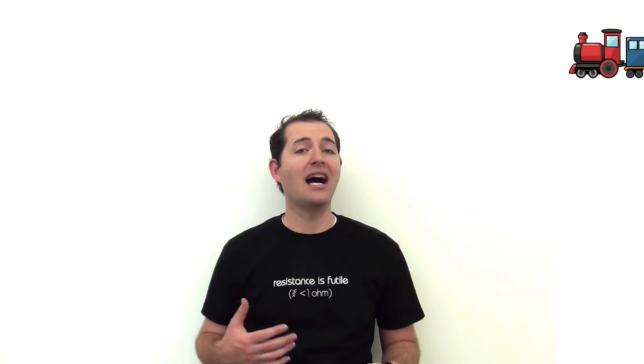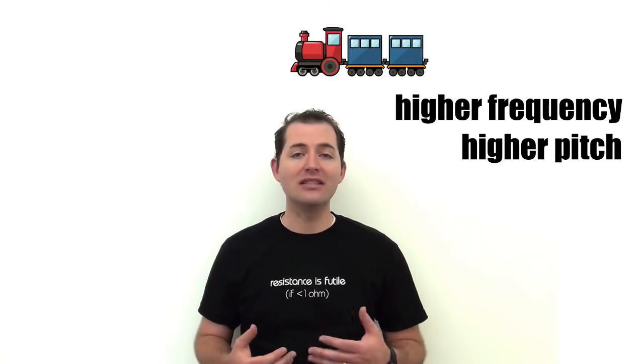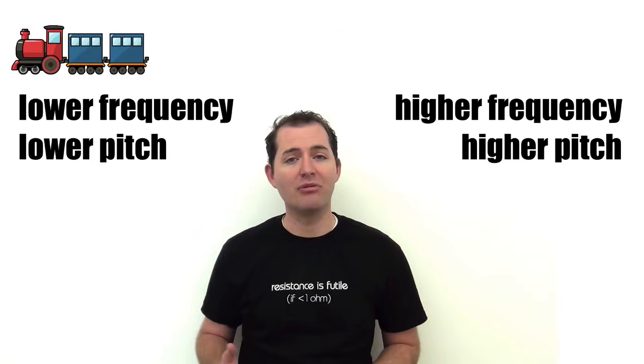You've probably experienced this when a car, a train, or an ambulance drives past you with its siren or horn blower. As the train is moving towards you, it has a higher pitch sound and once it goes past you, it then has a lower pitch sound.